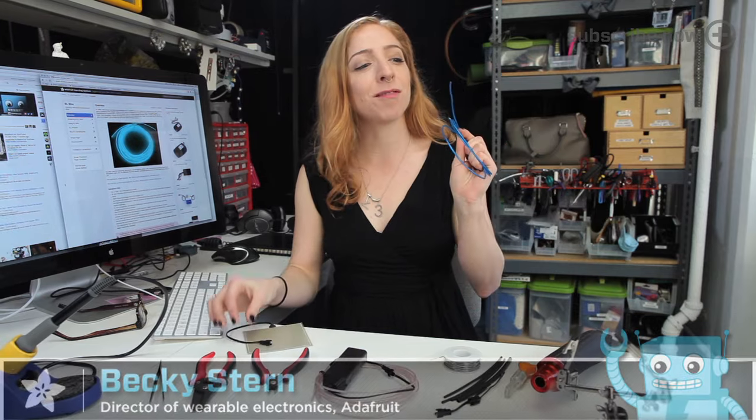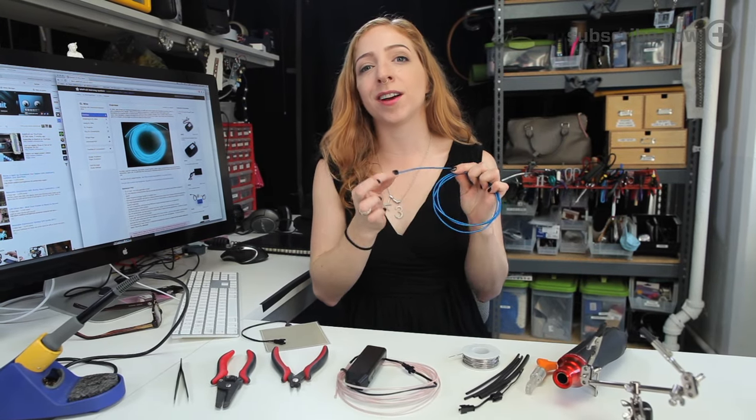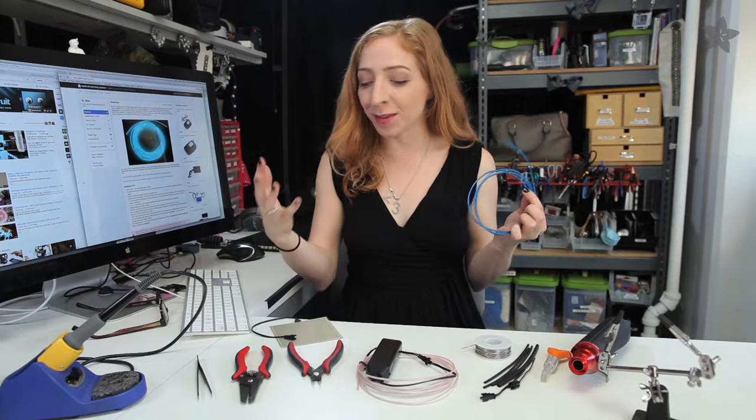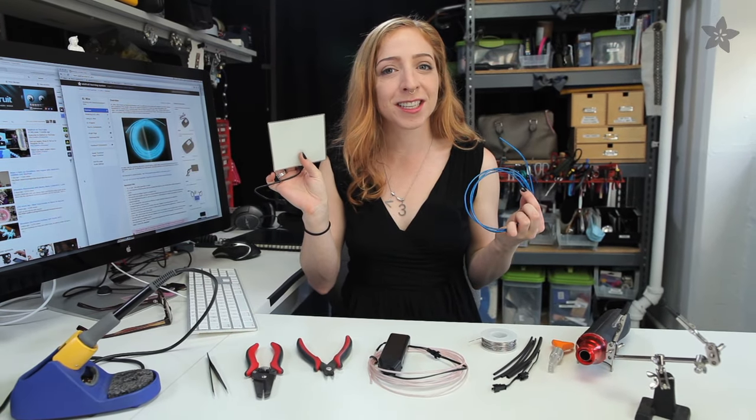Hey everybody, it's Becky Stern here at Adafruit where today we're talking about Electroluminescent materials. EL-Wire, for short, is a stiff wire coated in an electrically sensitive phosphor. It lights up like neon, it comes in a bunch of different colors, and it's one of our favorite ways to make projects glow.